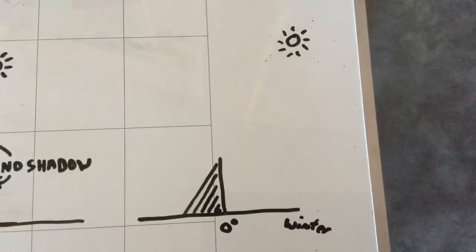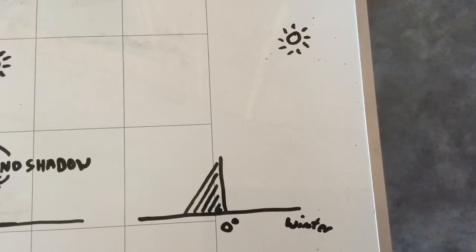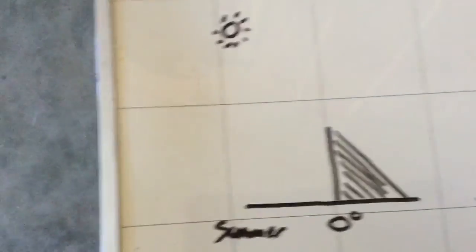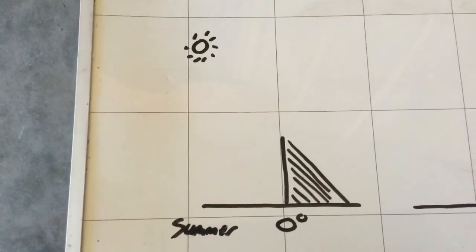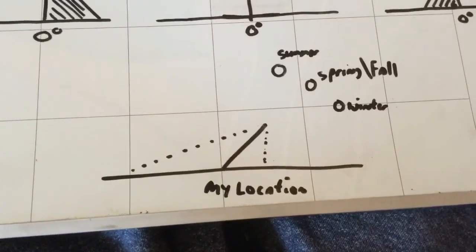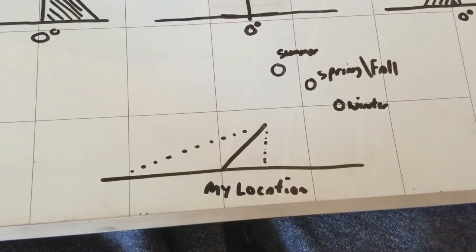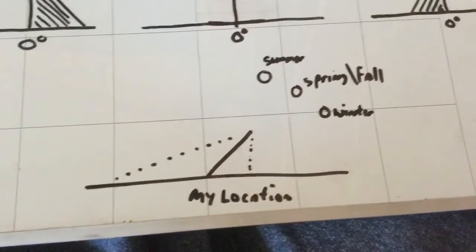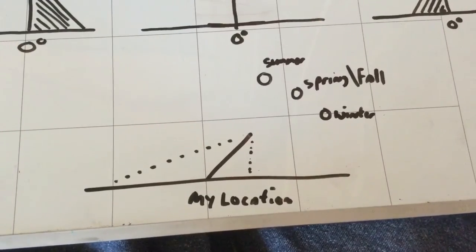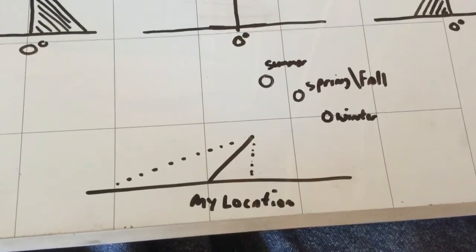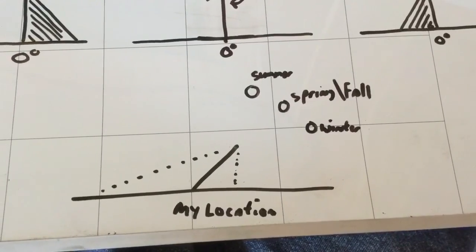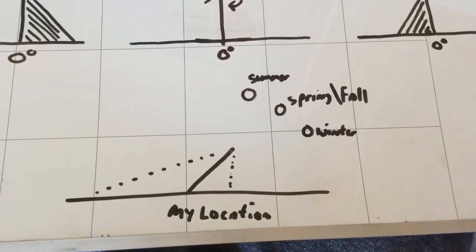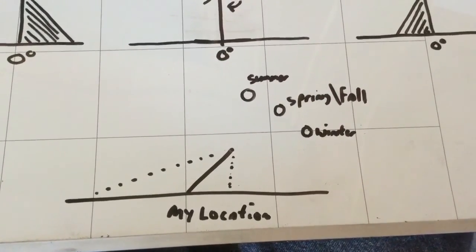On a winter day the shadow would be on one side; on a summer day it would be on the other side. But since I'm not on the equator, you have to get an angle to work with for it all to work right. That's the point — thanks for watching.